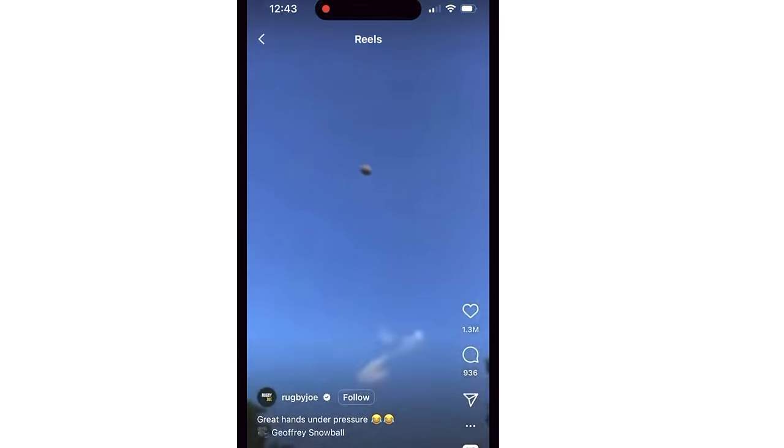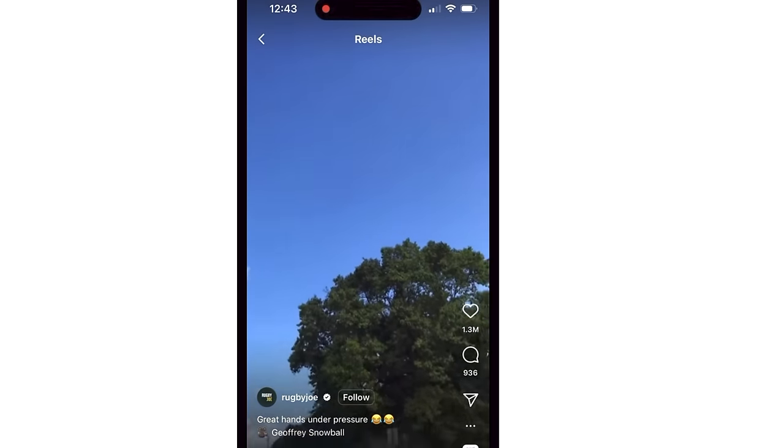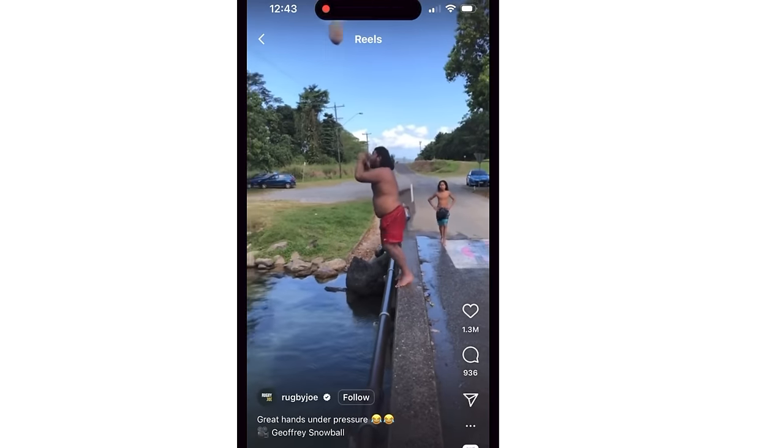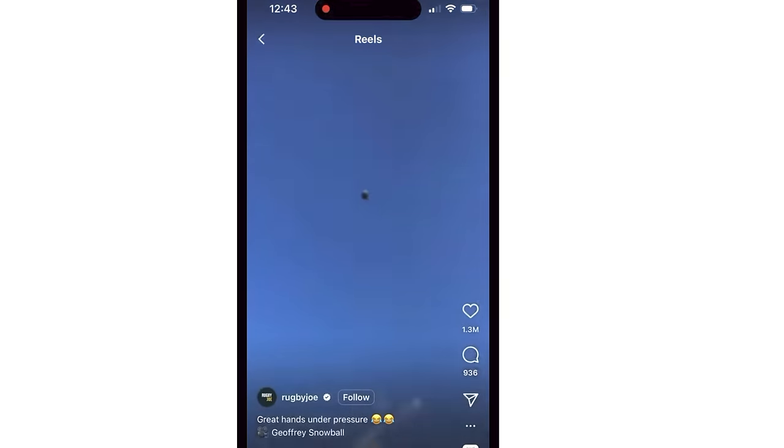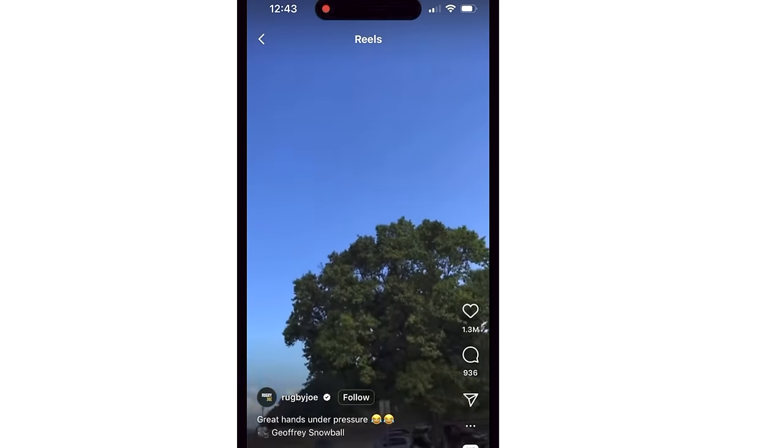This video posted by Rugby Joe on Instagram shows him jumping in the water and then he throws a ball that lands right after he hits the water. The ball gets launched in the air extremely high. How on earth did that happen?